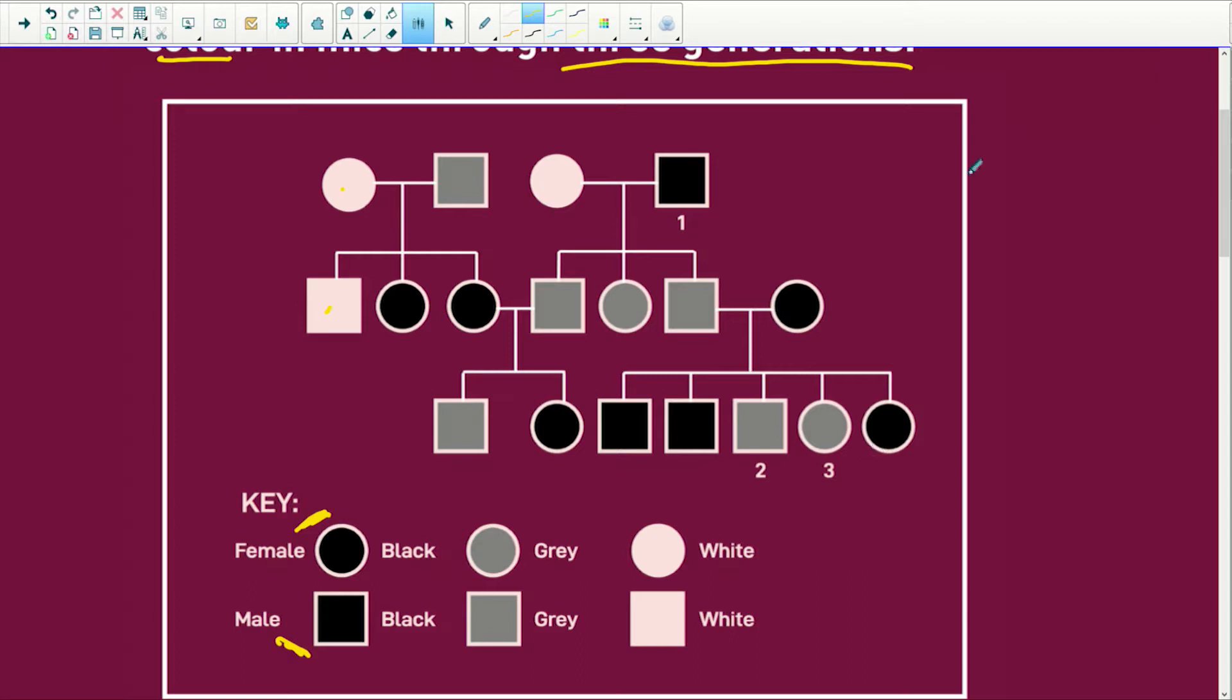So what does this tell us immediately? If you see black, you see white, you see grey, it means grey is the in-between colour. And being the in-between colour, we are looking at incomplete dominance. In other words, black doesn't dominate over white. And white doesn't dominate over black.